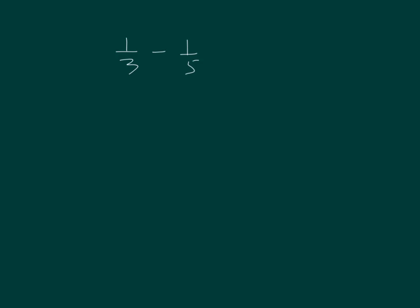How many fifteenths are equal to one-third? Right — five. If I multiply the numerator and denominator by five over five, I end up getting five-fifteenths.